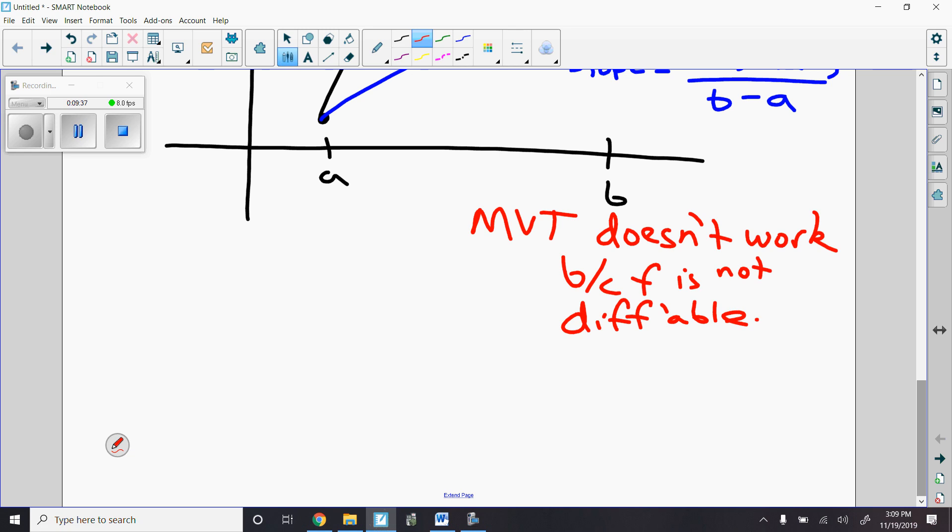Okay, so I can't use the mean value theorem there because F is not differentiable. Or, again, the MVT isn't guaranteed to work, okay? I could draw a non-differentiable one where I could get an F prime of C to match, okay? But it's not guaranteed. Theorems are all about what we can guarantee given specific conditions. Let me show you an example.